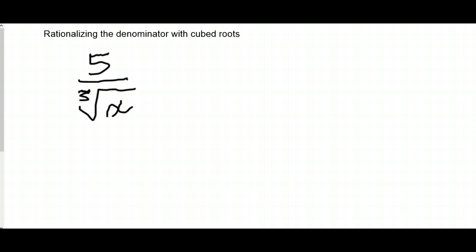Well, if I had, for example, 5 over square root of x, we would multiply the numerator and the denominator by square root of x. That's pretty much the way we do it when we have square roots.